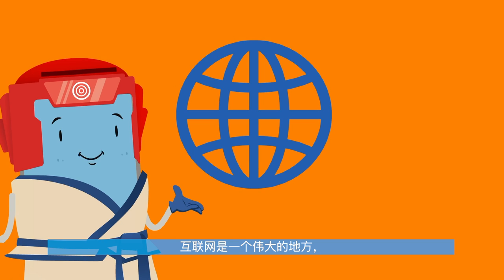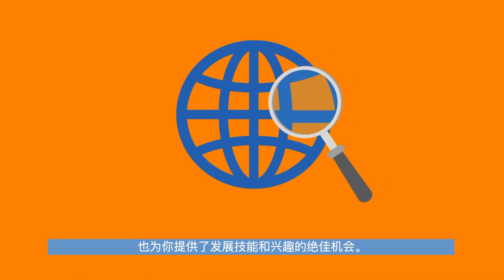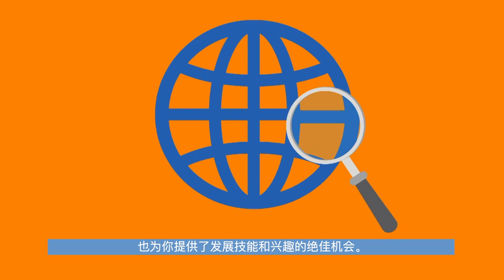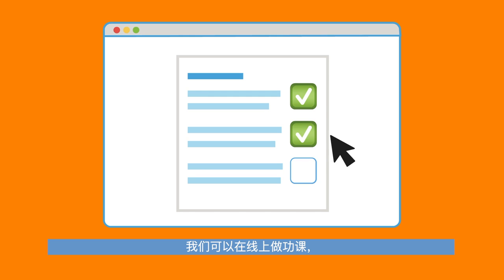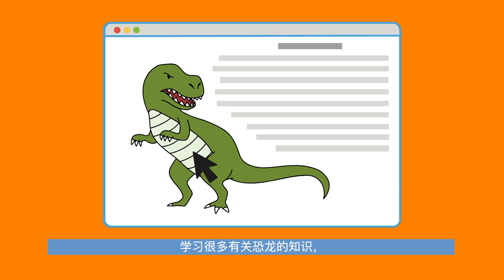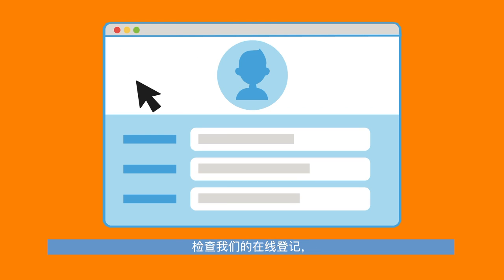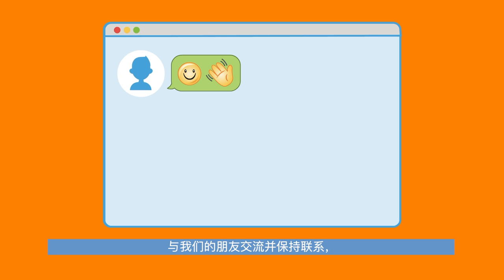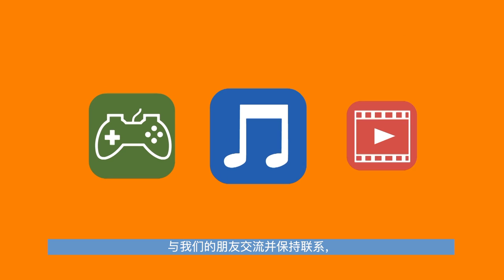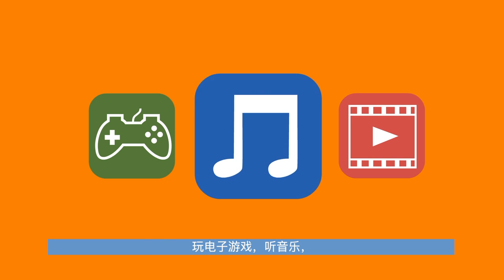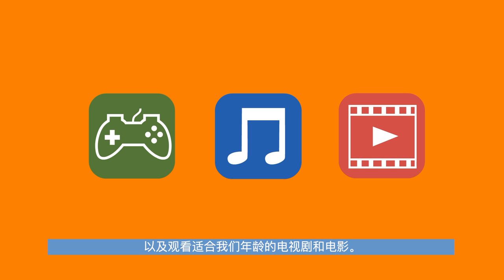The internet is a great place full of exciting adventures and great opportunities for you to develop your skills and interests. For example, we can do our homework online, learn a lot about dinosaurs, check our online register, communicate with our friends and stay connected to them, play video games, listen to music and watch TV series and movies appropriate to our ages.